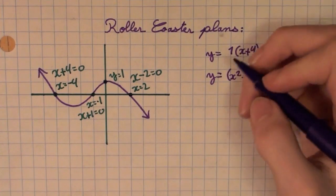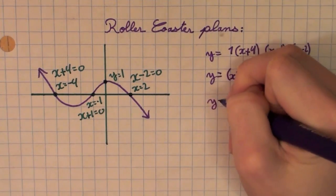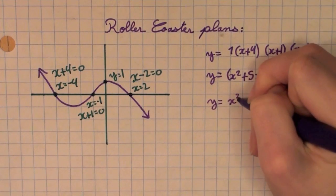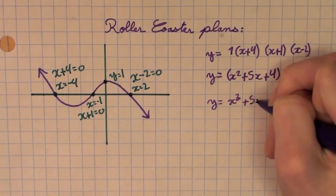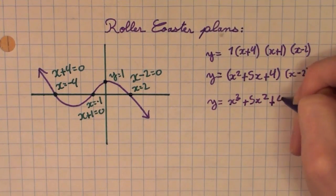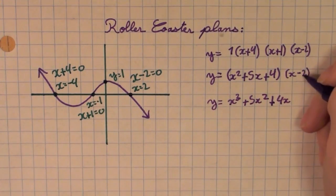Then, we can distribute the X. So, we have Y equals X to the third plus 5X squared plus 4X. Then, we distribute the negative 2.